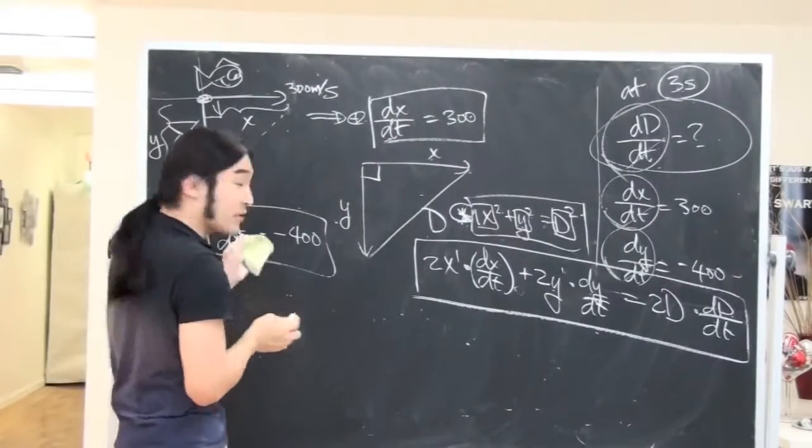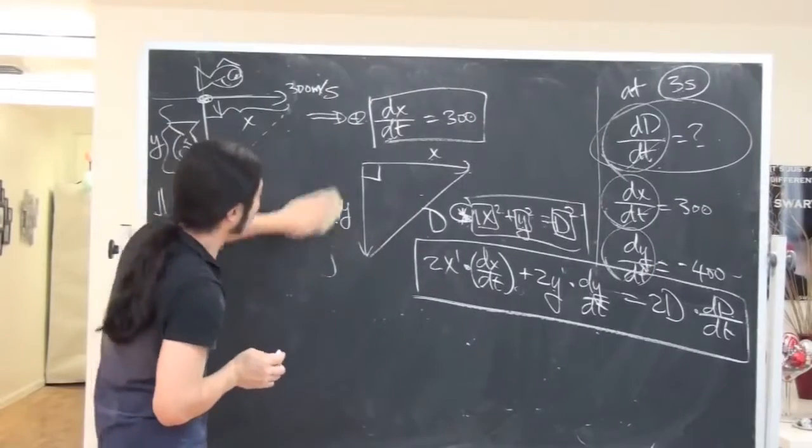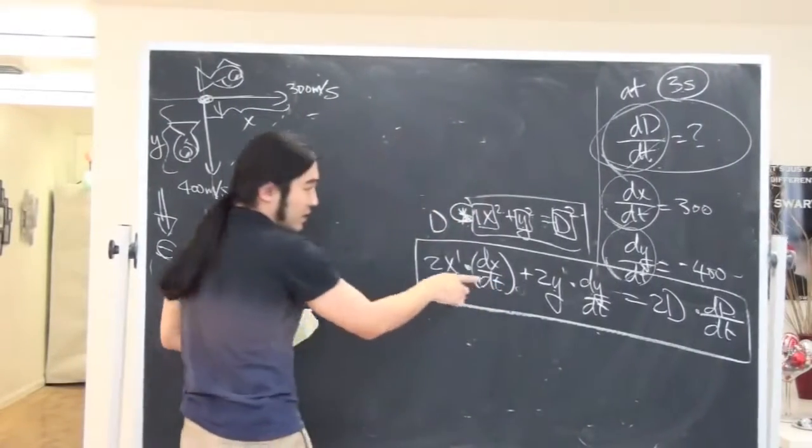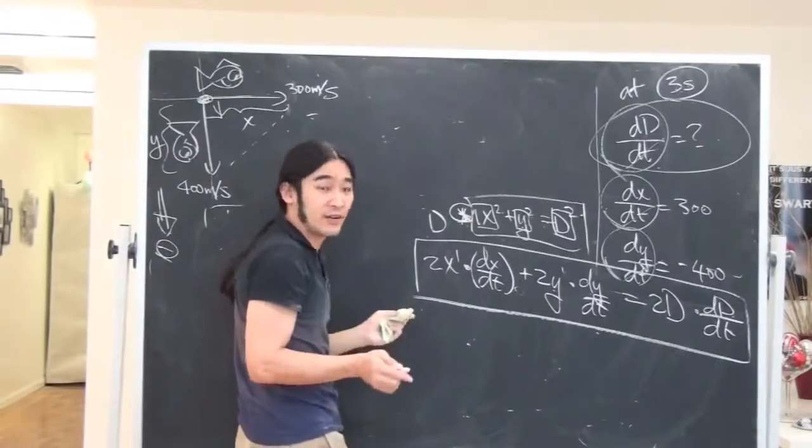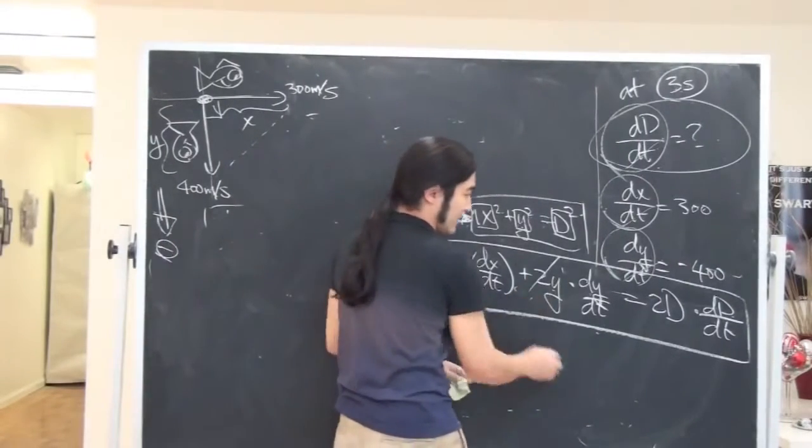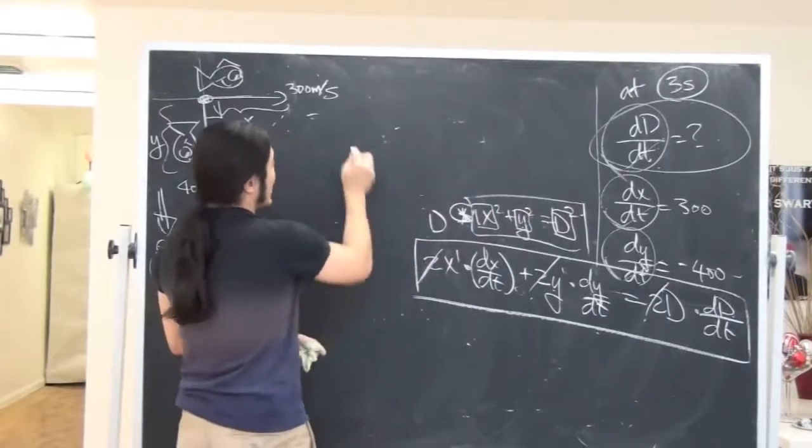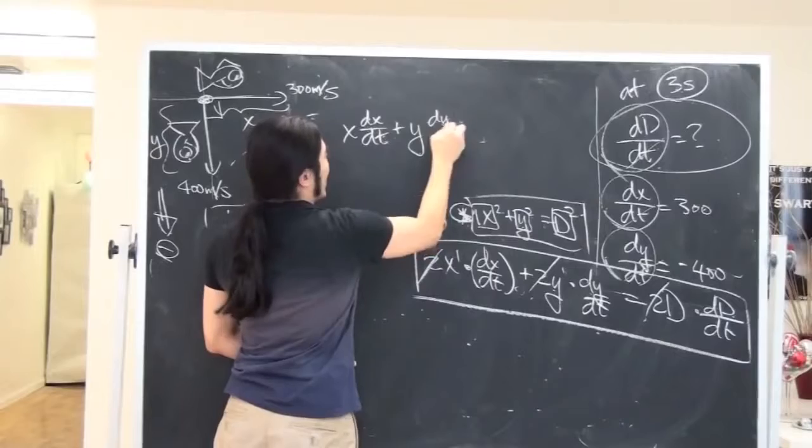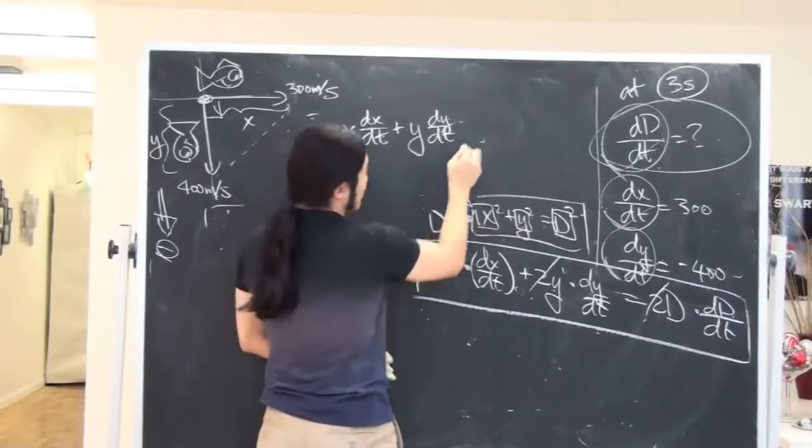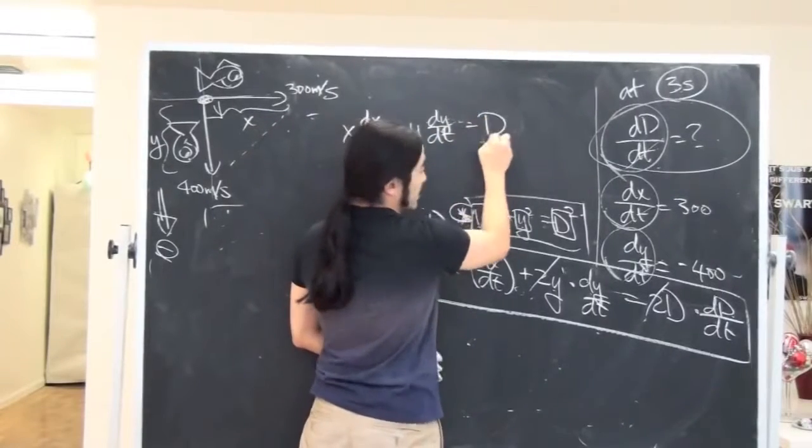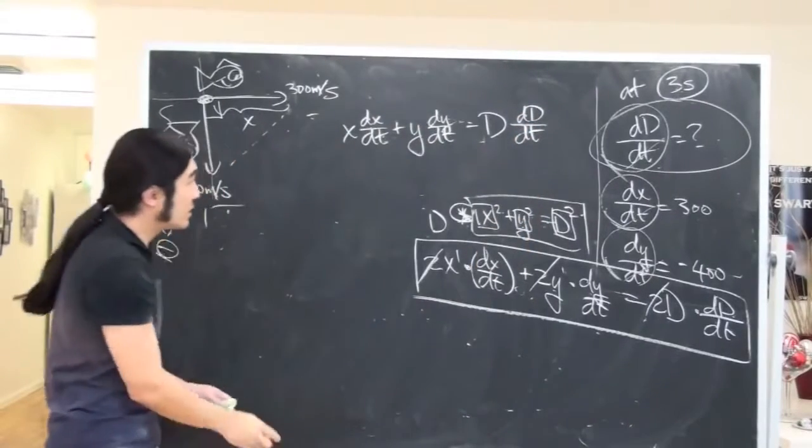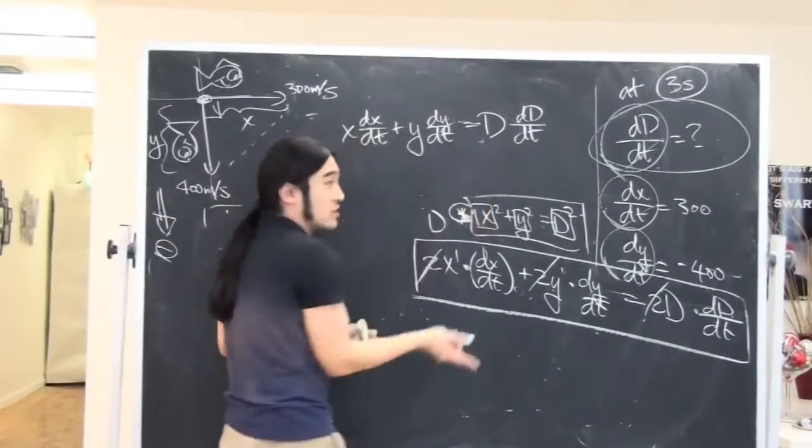So if you're okay with this, let me clean this up a little bit. Let me get some room. And just to make life easier, I want to divide everything by 2. Divide, divide, divide. Okay. So now I get something like x dx/dt plus y dy/dt is equal to d dd/dt. Okay. So everything looks good so far.